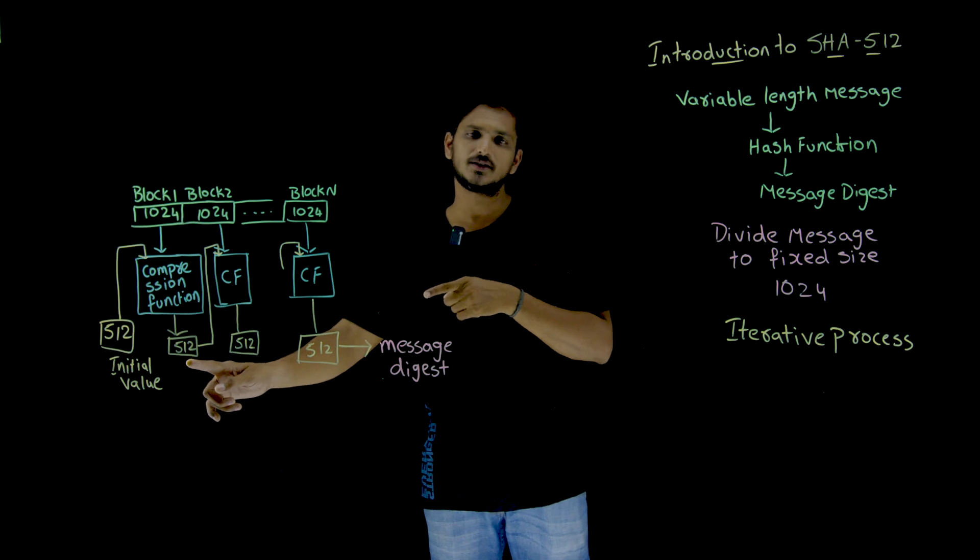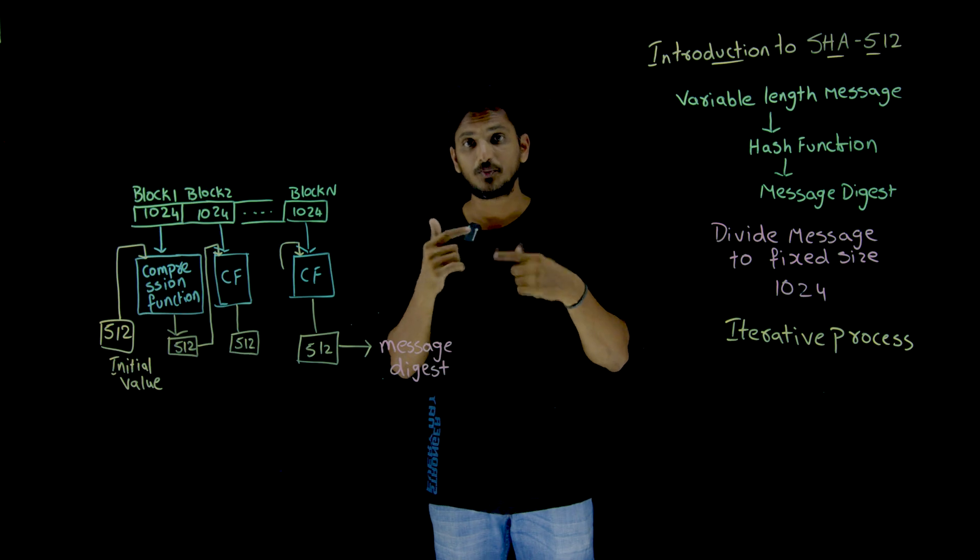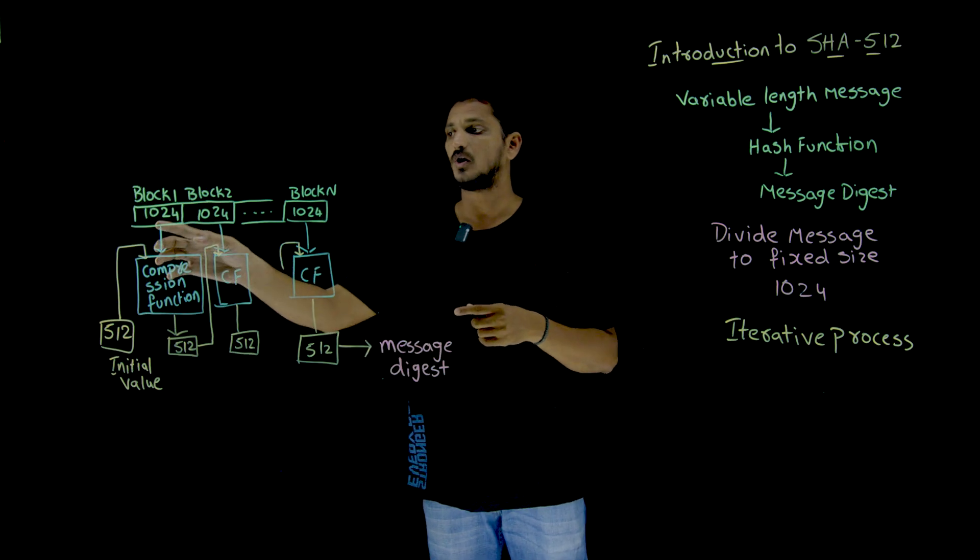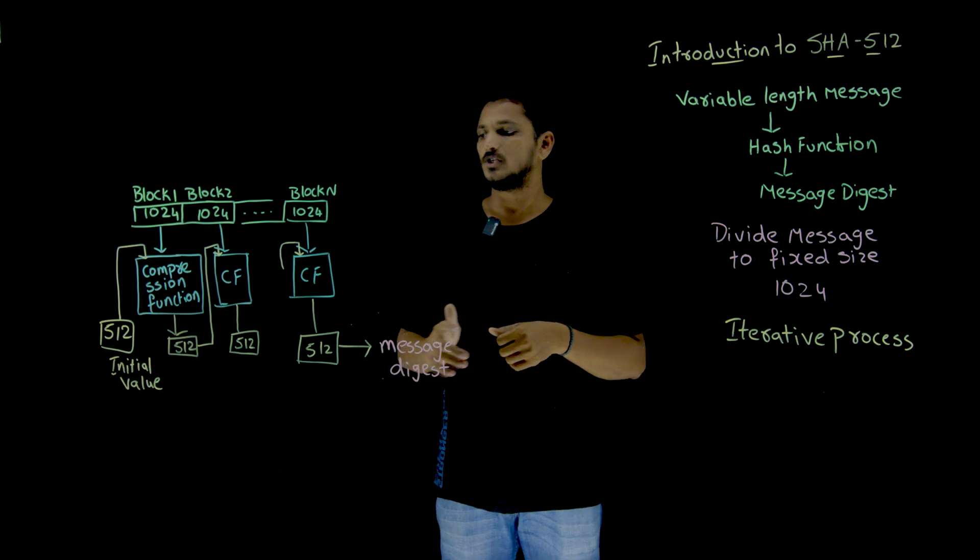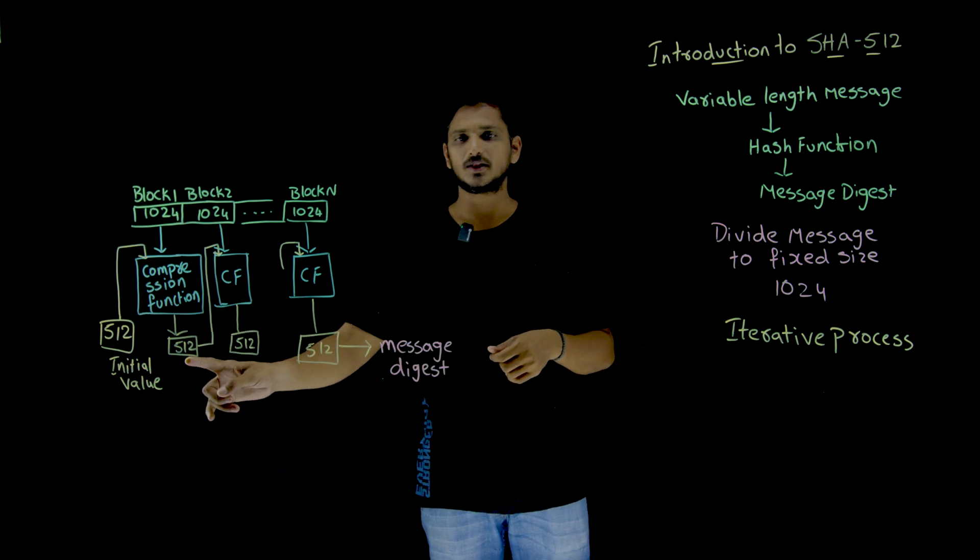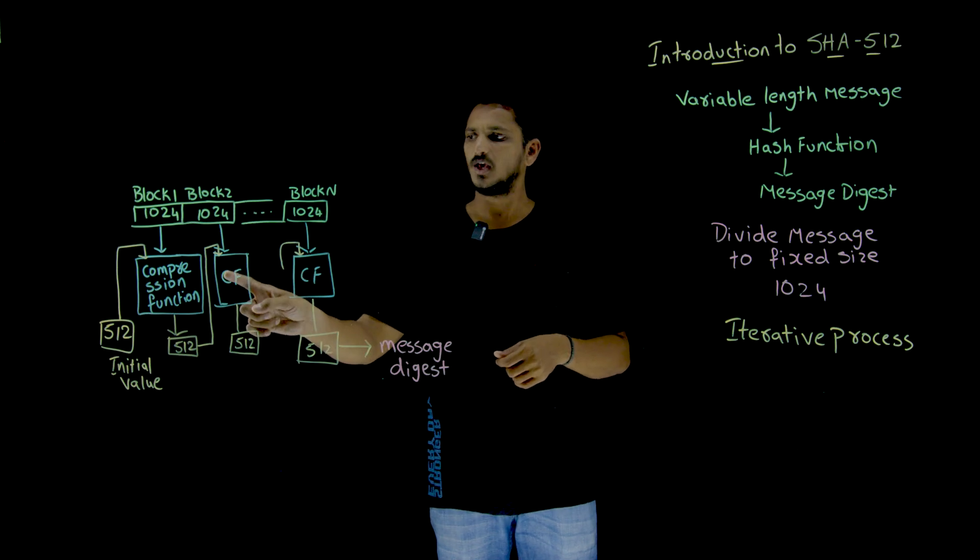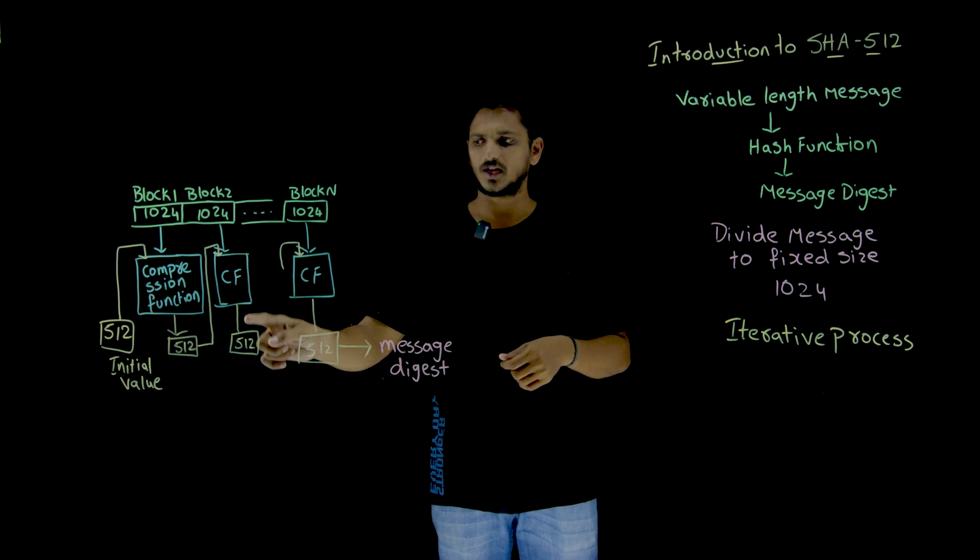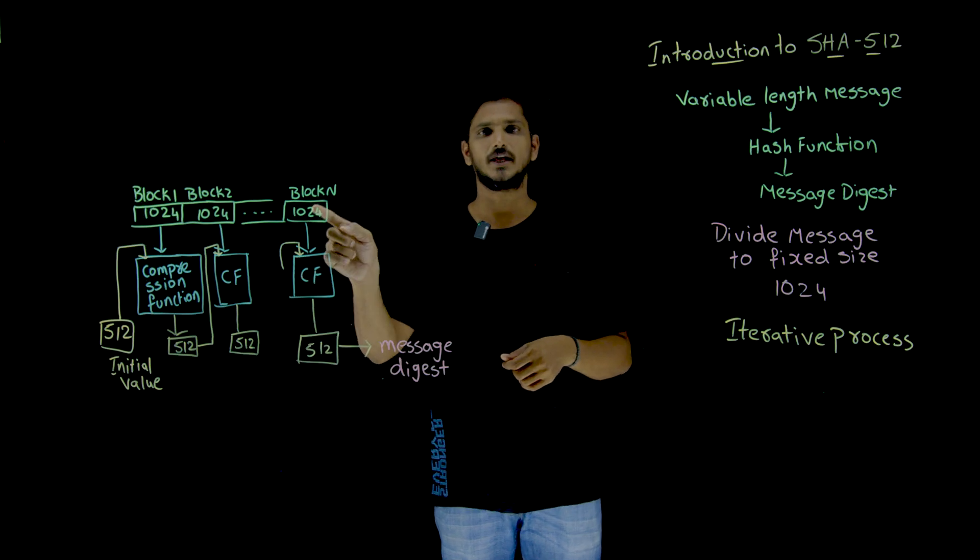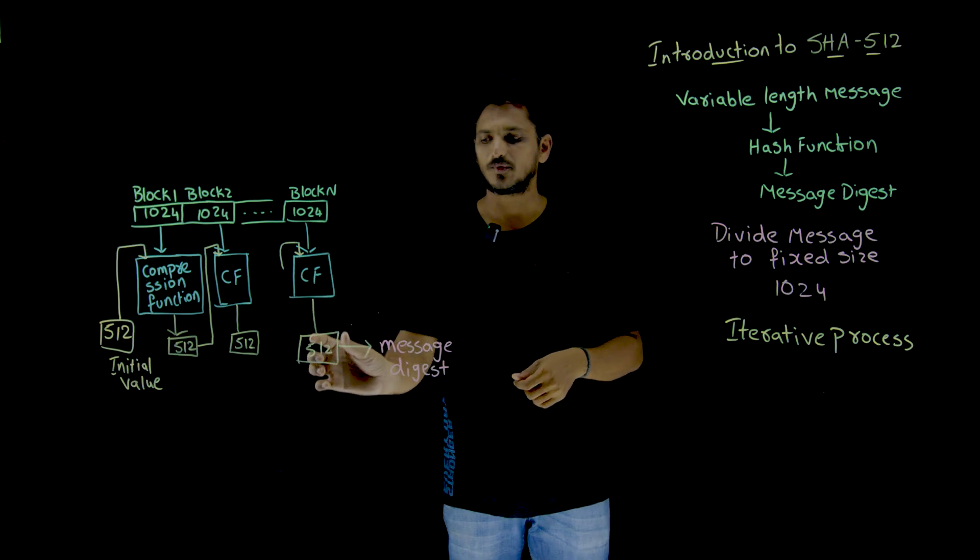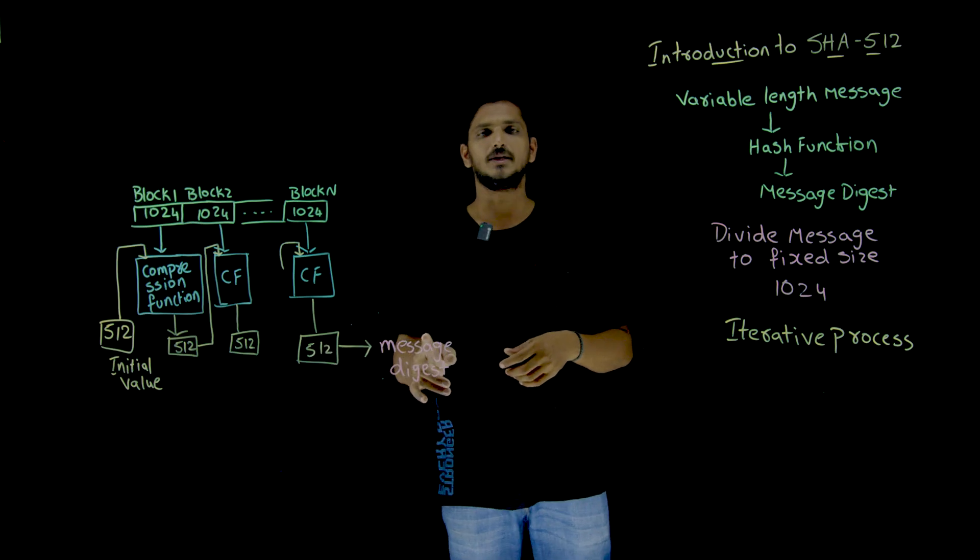But this is not considered as a message digest because the second part should also be involved in the message digest. Based on the complete message, we have to generate the message digest. So the output which we got here in the first block is taken as input to the second block and second block input is considered in the compression function. Again, you are going to get 512 bits. This is taken in the next block, like that to the last block. Whatever the output you got in this last block, we call this as a message digest.